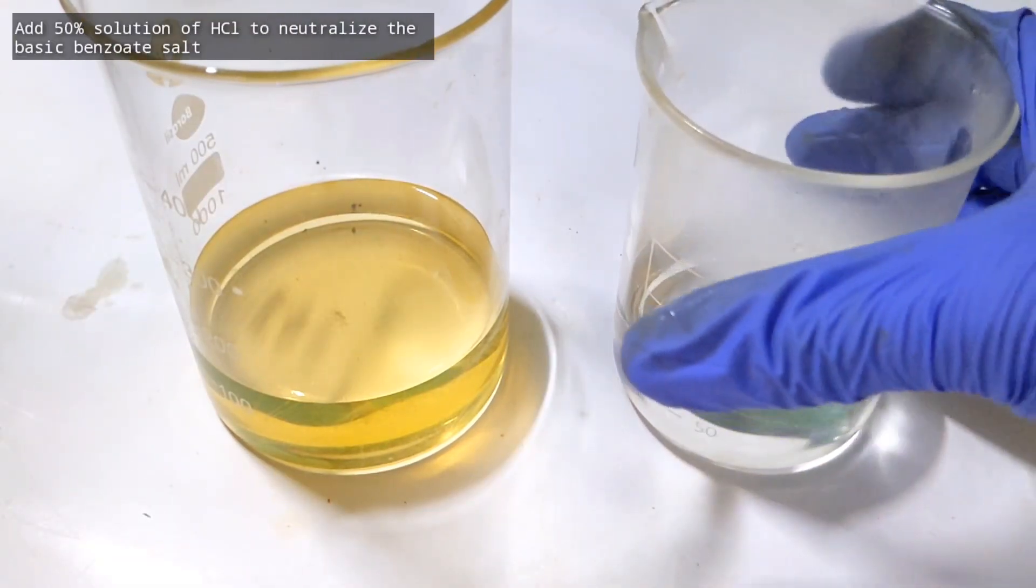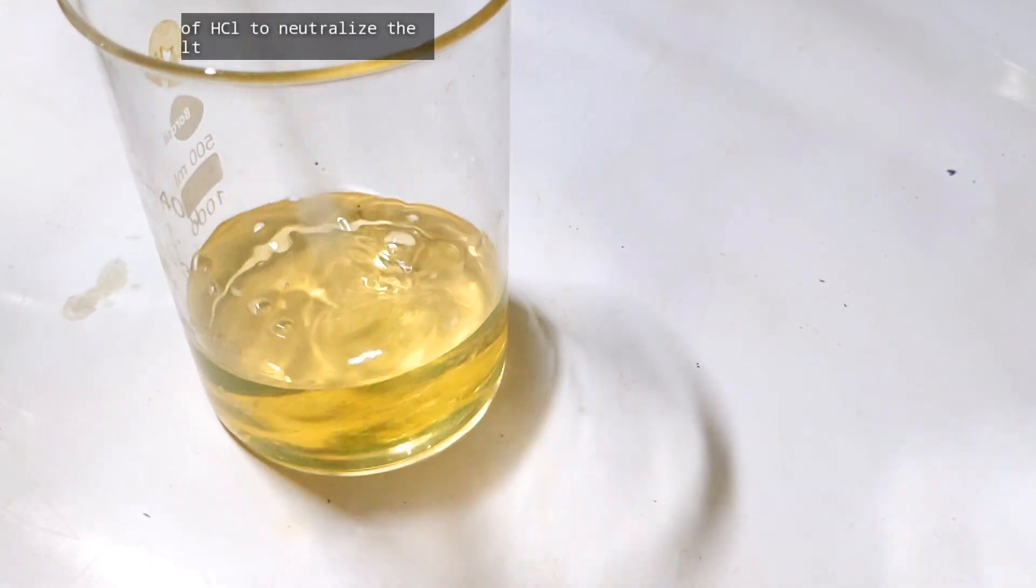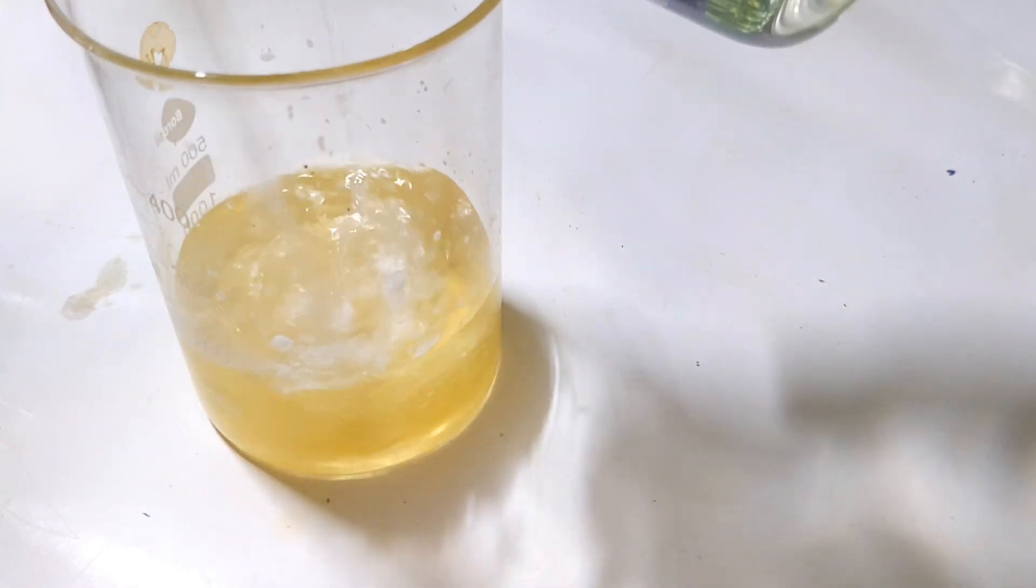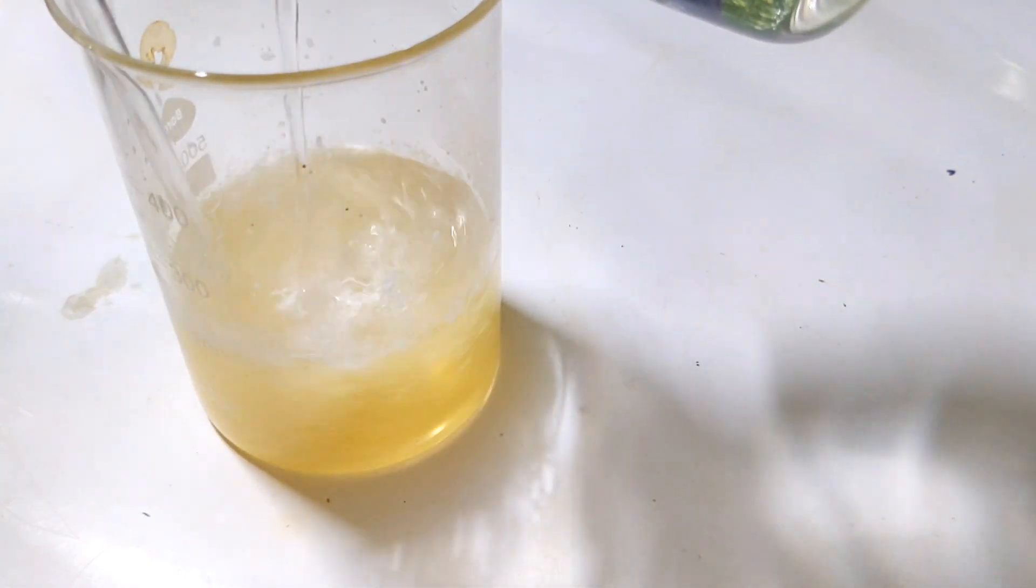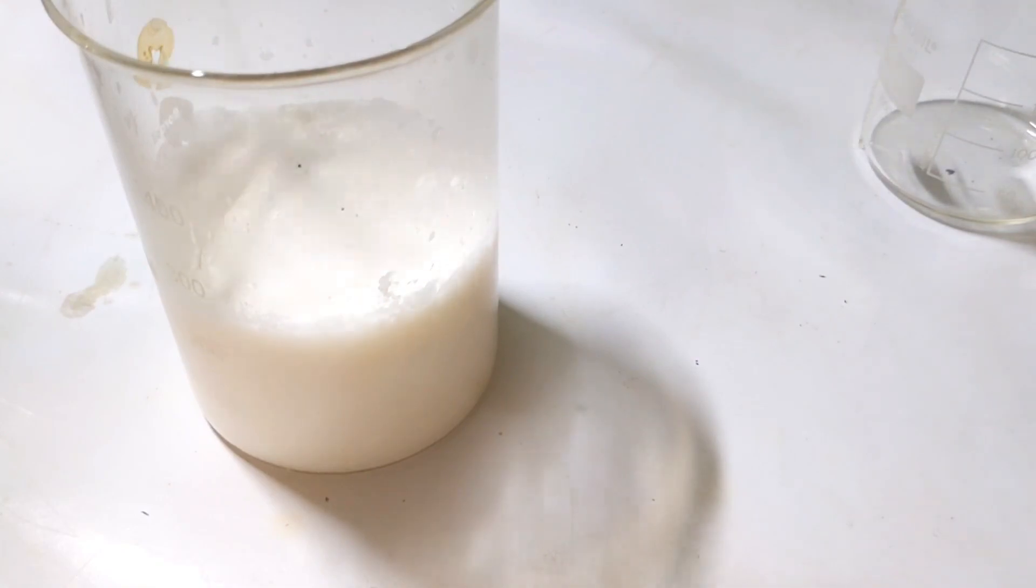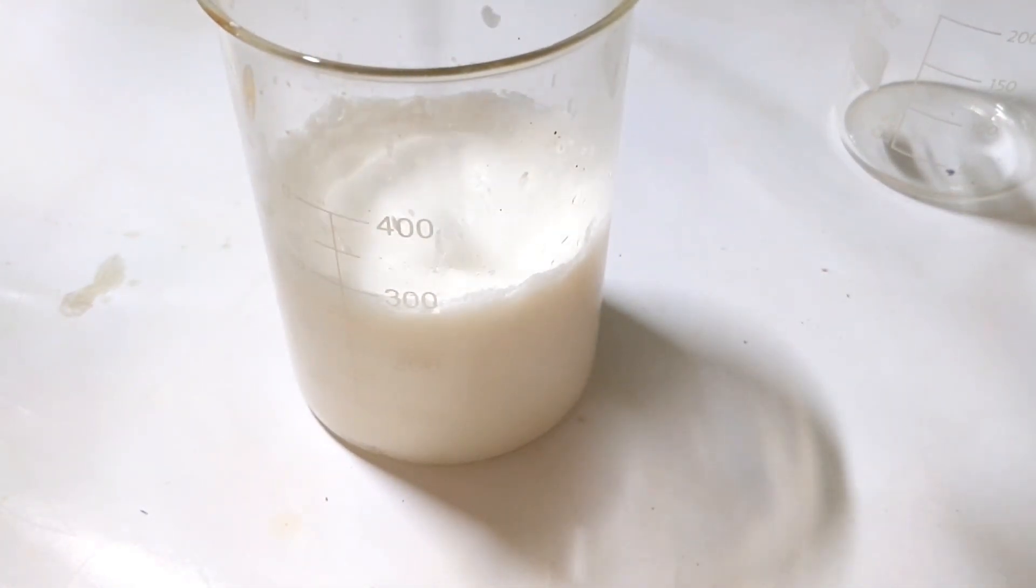Now moving on to the separation of benzoic acid, into the aqueous solution which we had separated from the ethereal layer, we add hydrochloric acid very slowly as the addition of hydrochloric acid to base is an extremely exothermic neutralization reaction. Once the pH becomes neutral, you can see benzoic acid will precipitate out and a white precipitate of crude benzoic acid is obtained.